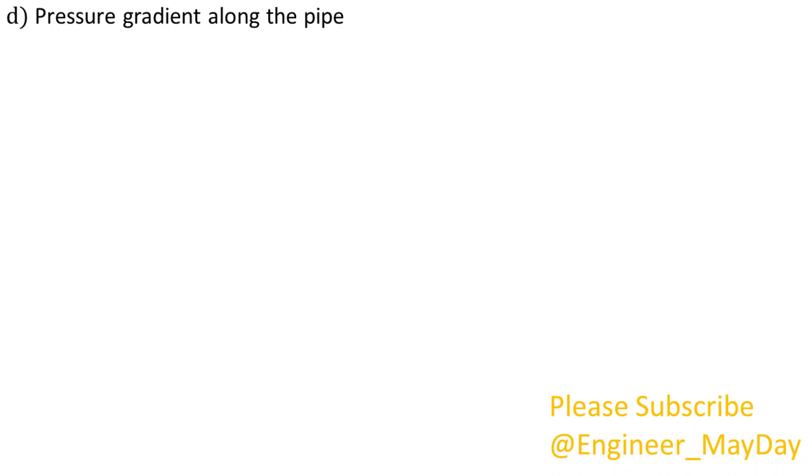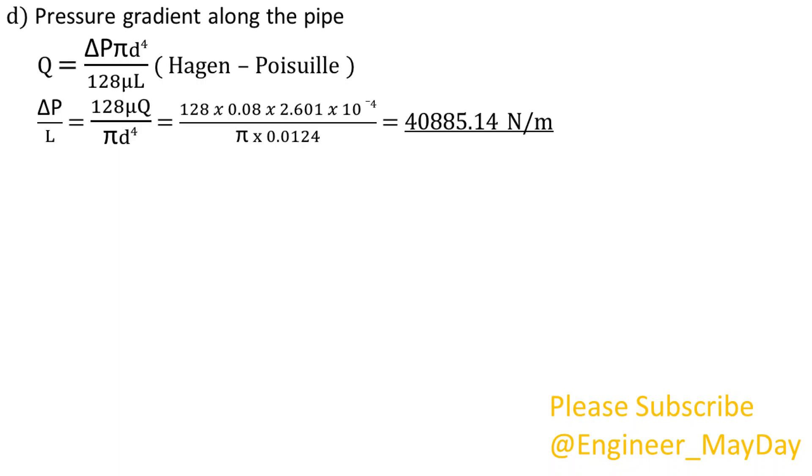Pressure gradient along the pipe. Using Hagen-Poiseuille equation Q is equal to change in P multiplied by pi D to power 4 divided by 128 mu multiplied by L. Where P is the pressure in the pipe, D is the diameter of the pipe, mu is the dynamic viscosity and L is the length of the pipe. Thus pressure gradient is equal to 40,885.14 newton per meter.